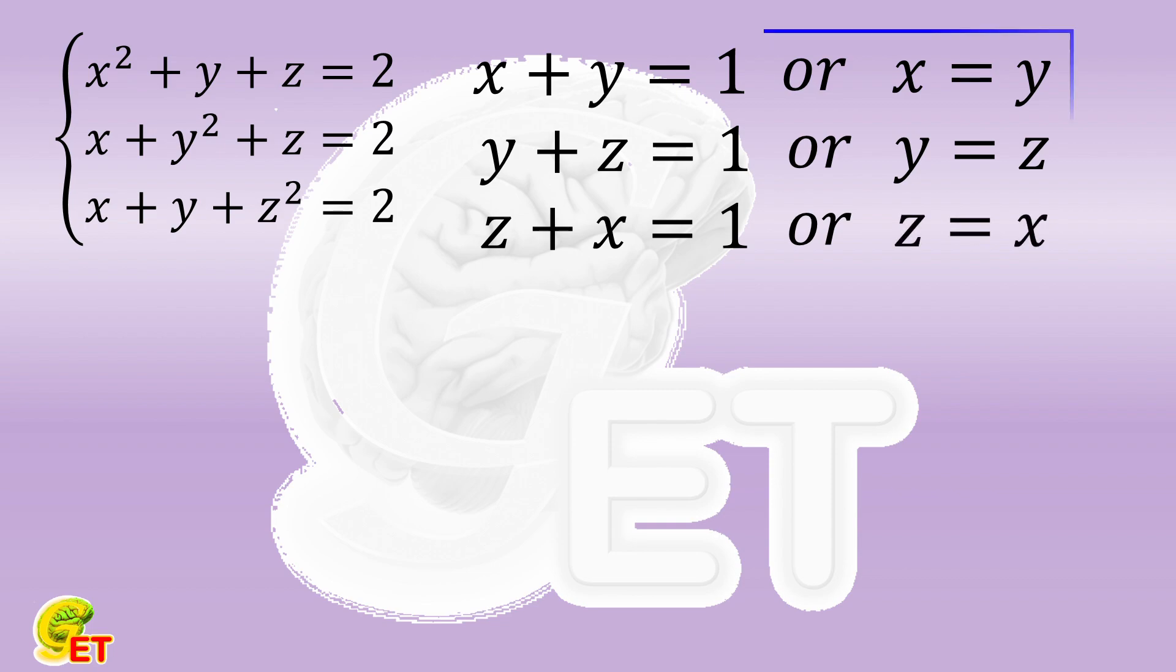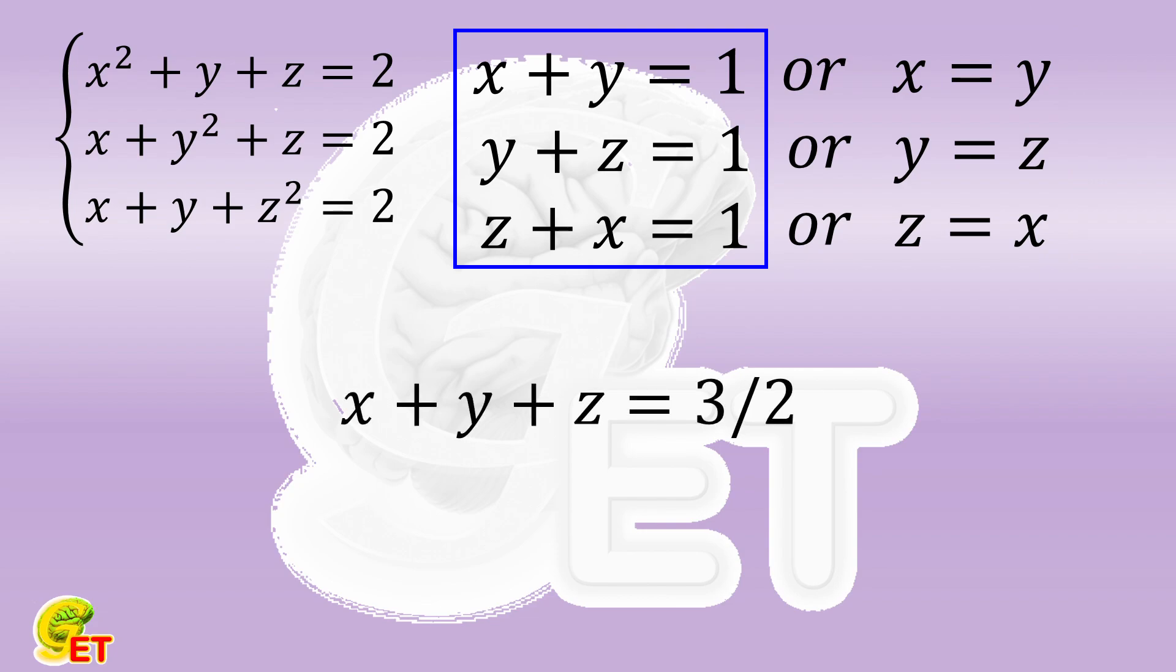At least one of these three groups of conditions must be fulfilled. In the first extreme case, we choose the conditions on the left side in all three groups. Adding them up, we get x plus y plus z equals 3 halves. Subtracting each condition respectively gives x, y, and z all equal to 1 half.